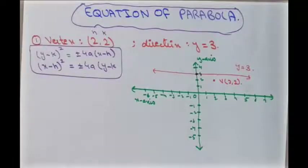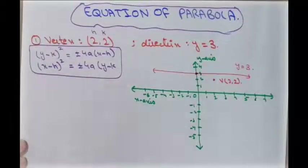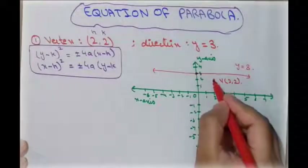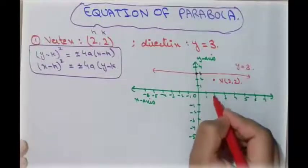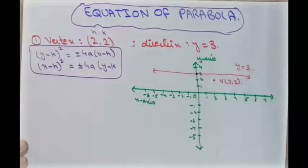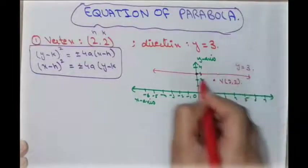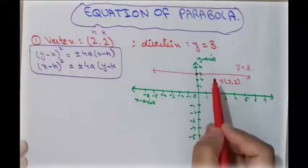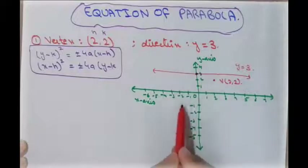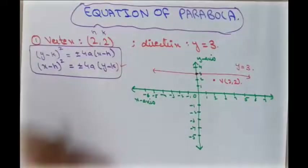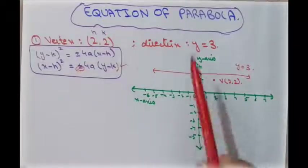The parabola opens downward, because a parabola always opens towards its focus and away from the directrix. It can't open upward because that would cut the directrix, which is not possible. It also can't open left or right for the same reason. So we use the equation with a negative sign, since it opens downward.